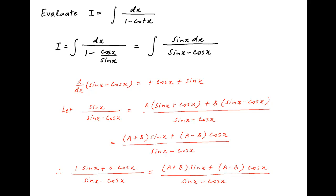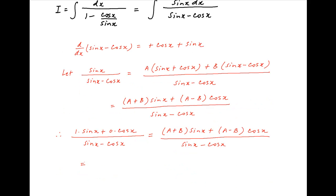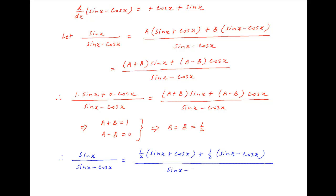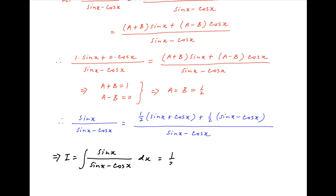Since the denominator is the same, equating the numerators gives a plus b equals 1 and a minus b equals 0. Solving these two equations, we get a equals b equals one-half. Therefore the integrand sinx upon (sinx minus cosx) can be written as one-half of (sinx plus cosx) plus one-half of (sinx minus cosx), all divided by (sinx minus cosx).